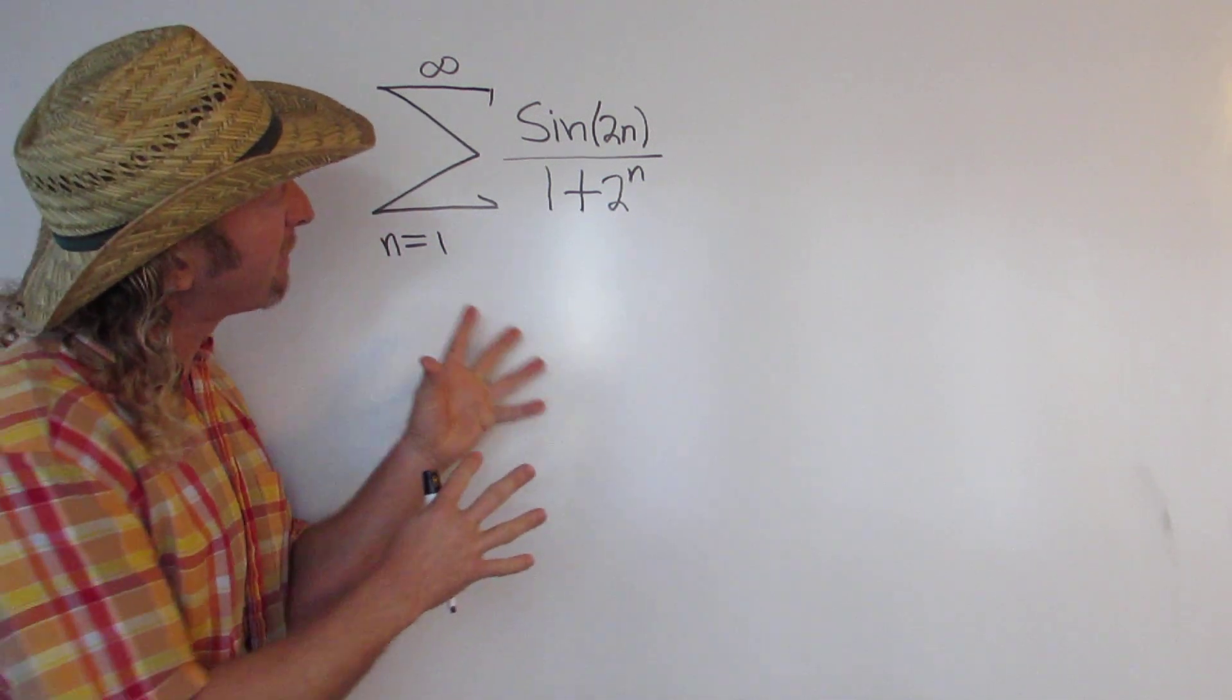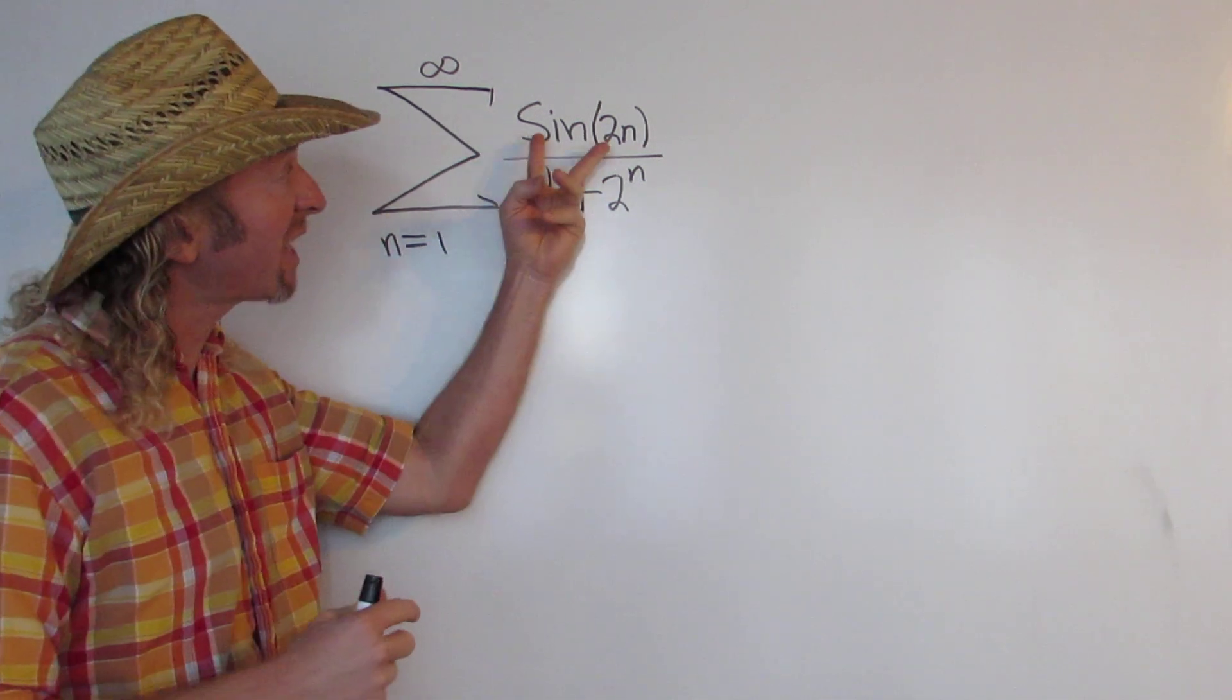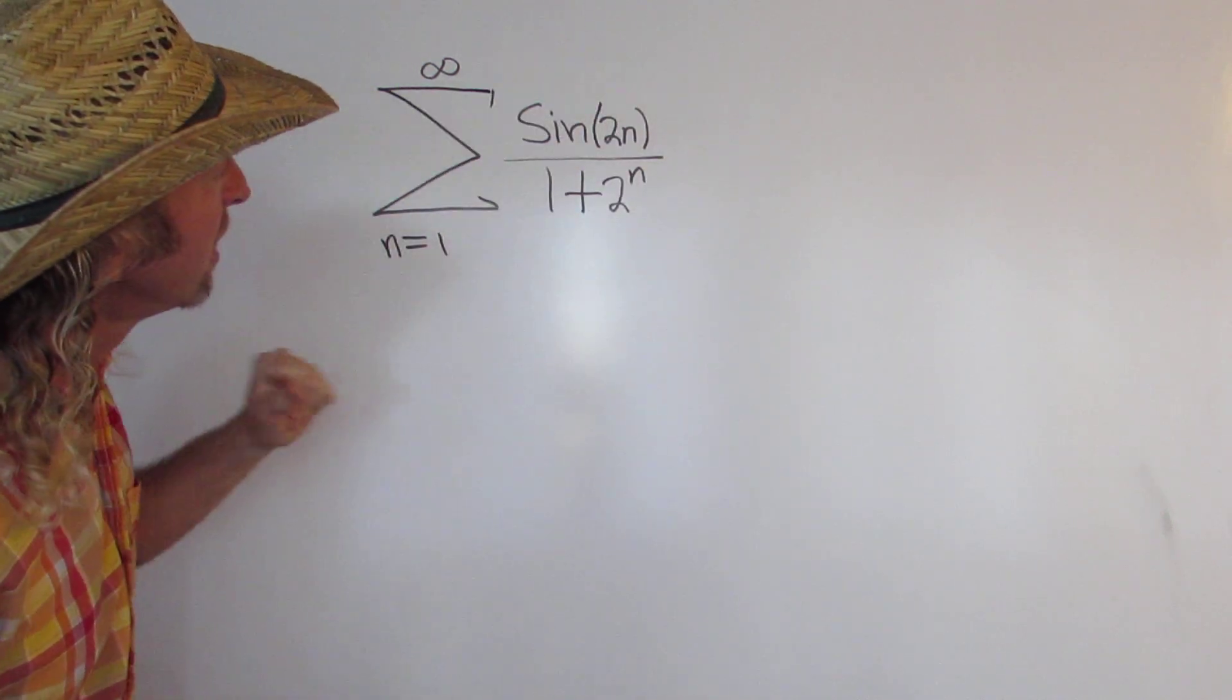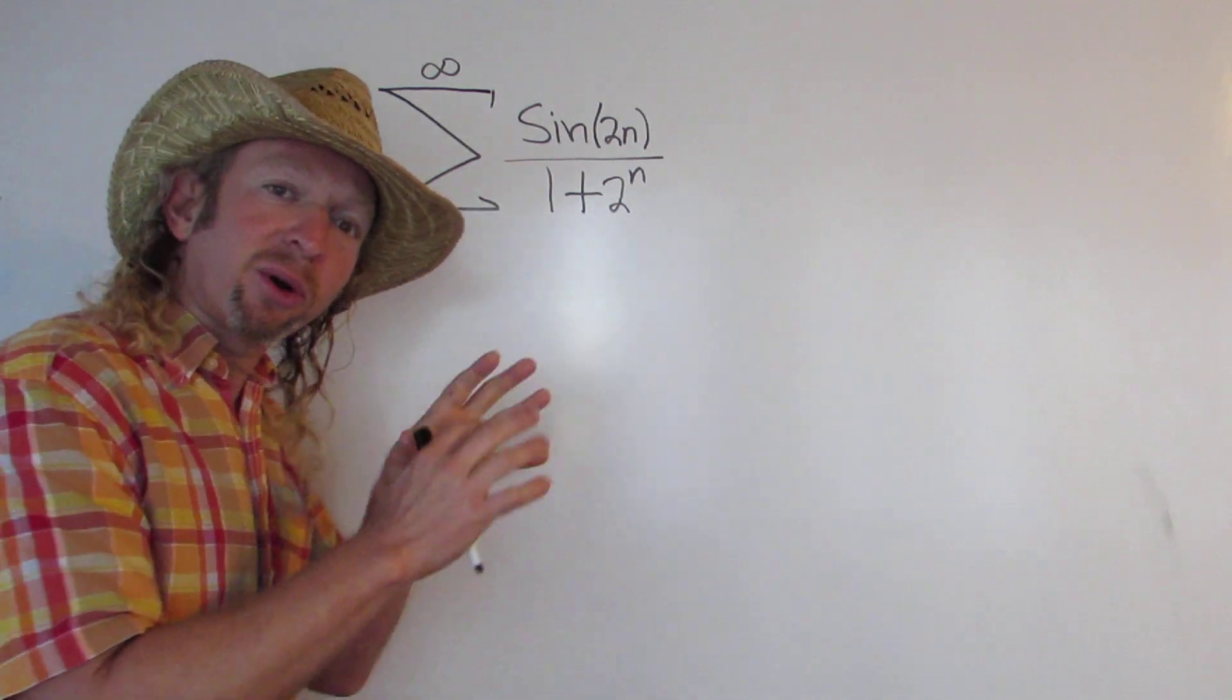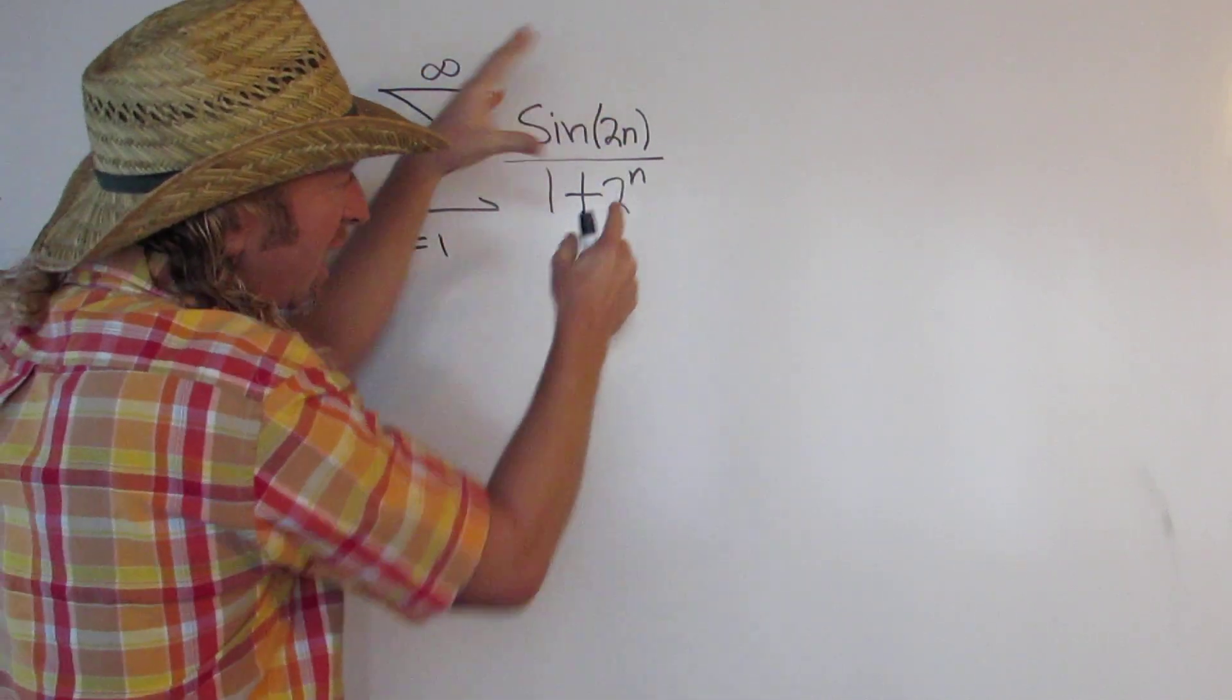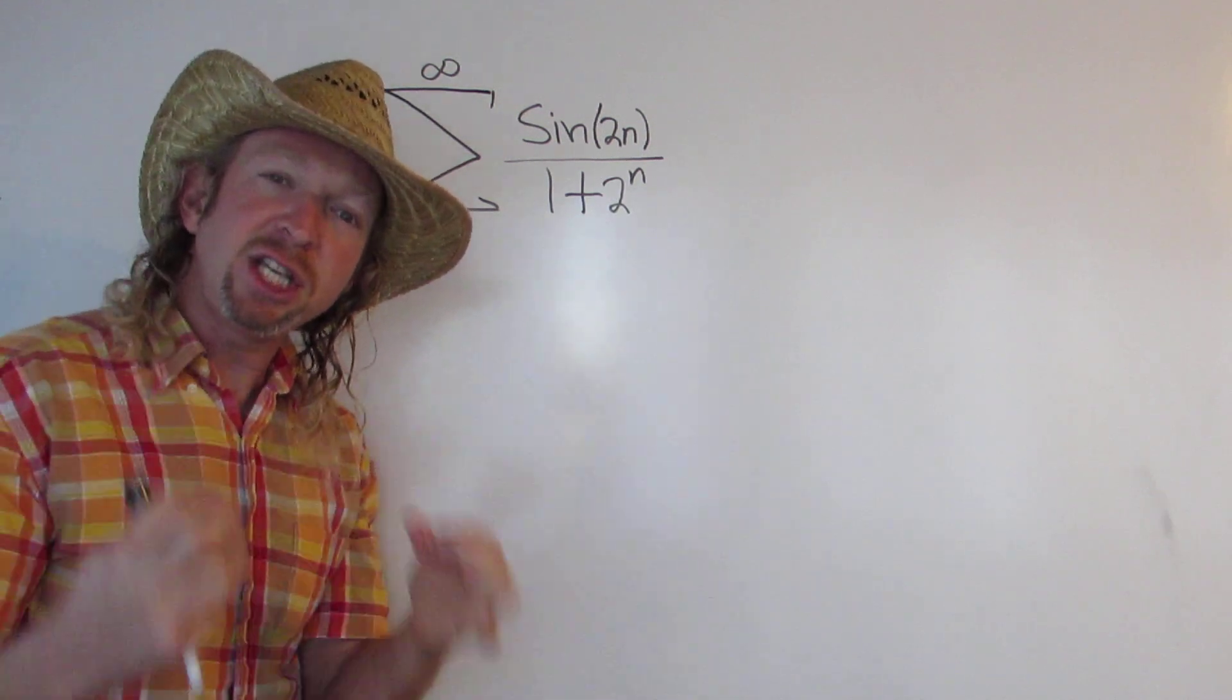So, the first thing you think about when you have a sum like this is the sine function is bounded by 1. That means it's trapped between negative 1 and 1. So you can kind of ignore it, or at least we'll be able to control it at some point. And on the bottom we have a 2 to the n that should make you think of a geometric series.